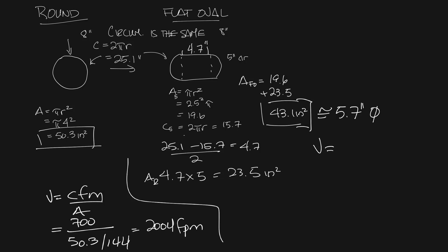Now on the oval, let's say we have that same 700 CFM. Velocity is going to equal 700 divided by 43.1, again divide that by 144, and that's going to come out to about 2339 feet per minute.